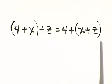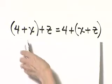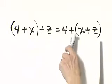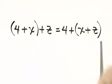Or if there's a change in order, that's the commutative property. Notice we have 4, then x, then z. And over here we have 4, then x, then z. So order has not changed.